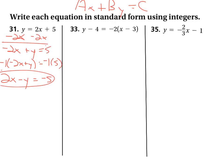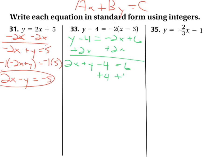For number 33, we need to distribute. We get y minus 4 equals negative 2x plus 6. We add 2x to both sides to get 2x plus y minus 4 equals 6, then move the constant to get 2x plus y equals 10.